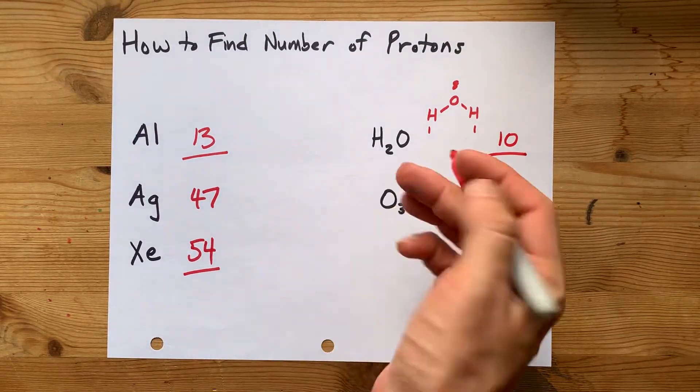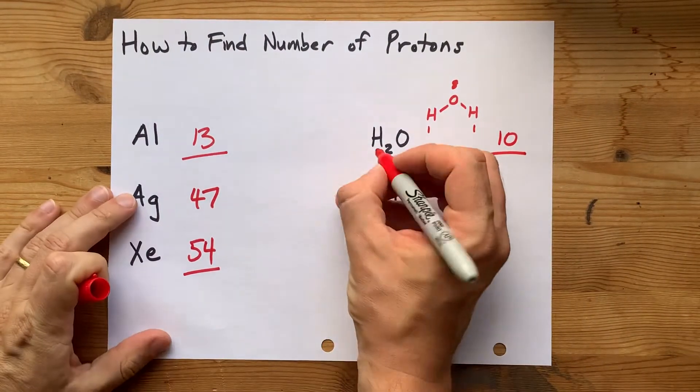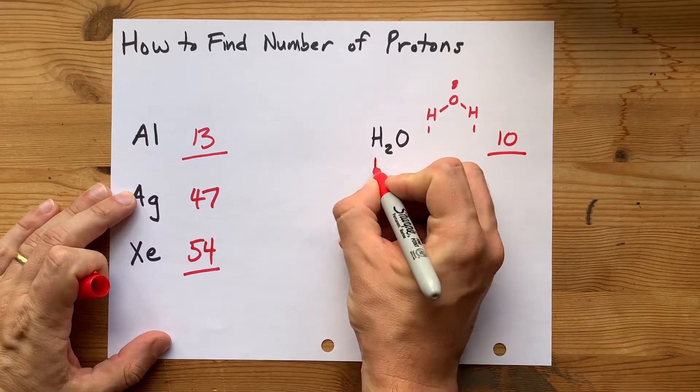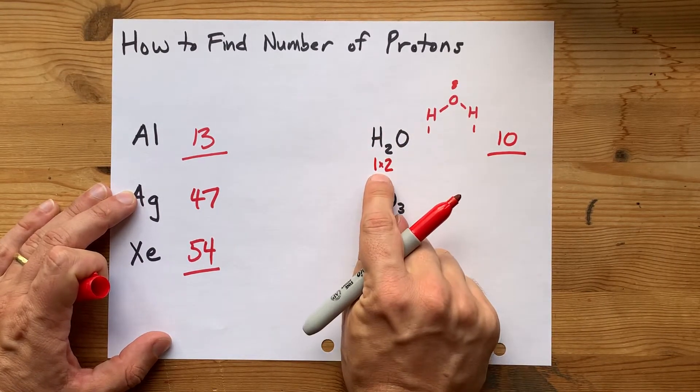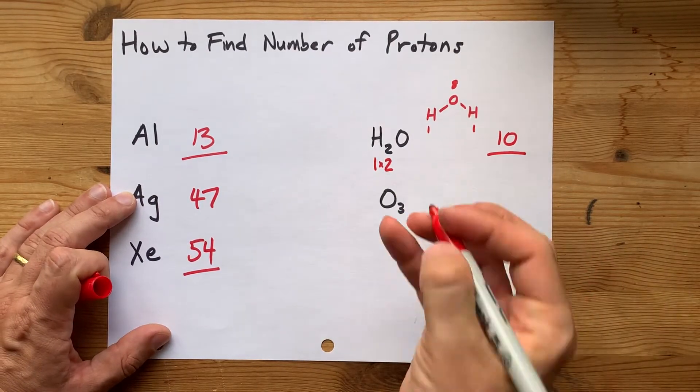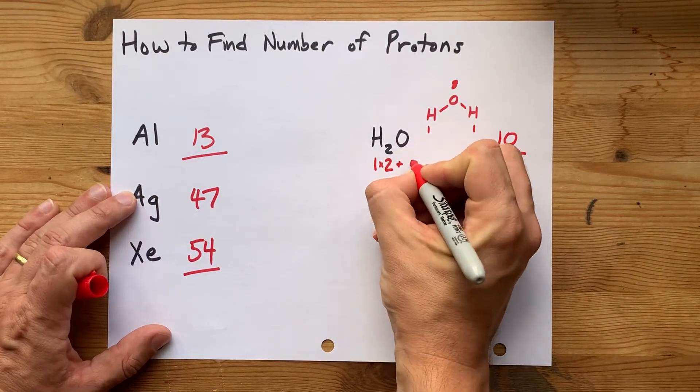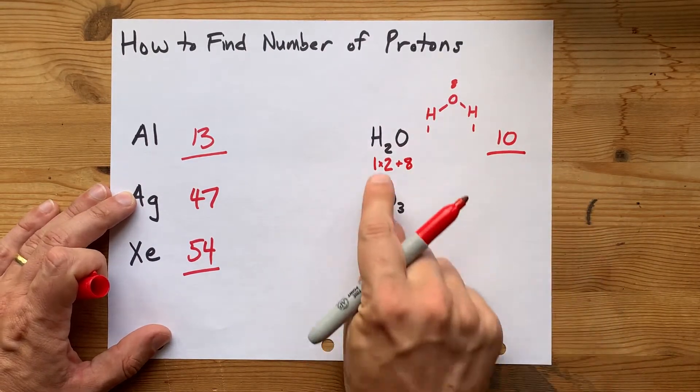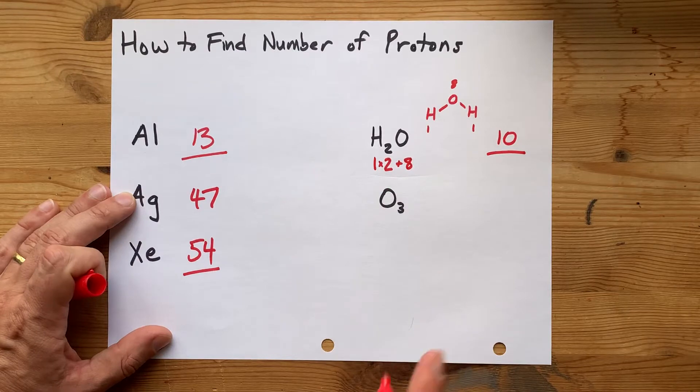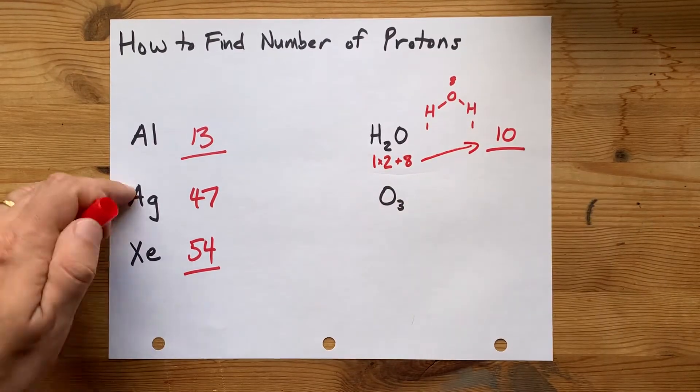Now, you don't have to draw the molecule to make that happen, right? Each of the hydrogens is one, and there are two of them. You'd have to times by two, because you have two of them, and you add it to however many protons oxygen has, which ended up being eight. Type that in your calculator as is. It also gives you ten.